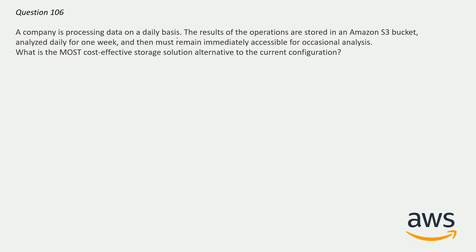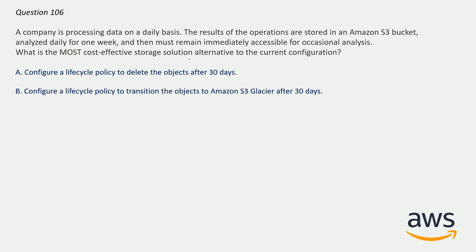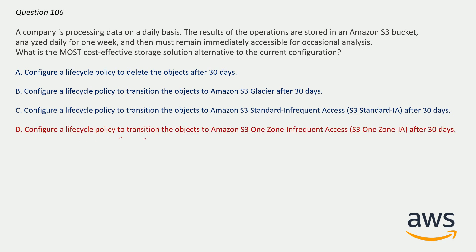Question number 106: A company is processing data on a daily basis. Results are stored in an Amazon S3 bucket, analyzed daily for one week, and must then remain immediately accessible for occasional analysis. What is the most cost-effective storage solution? The correct answer is option D: Configure a lifecycle policy to transition objects to Amazon S3 One Zone-Infrequent Access after 30 days. You might consider option C (S3 Standard-Infrequent Access), but since the question asks for the most cost-effective option, and high availability is not mentioned, option D is correct.